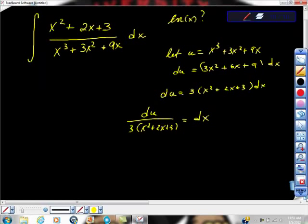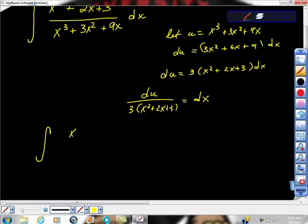So just from here, I'm going to go to x squared plus 2x plus 3 all over, all over what? Yeah, exactly, over u, times du over 3x squared plus 2x plus 3.